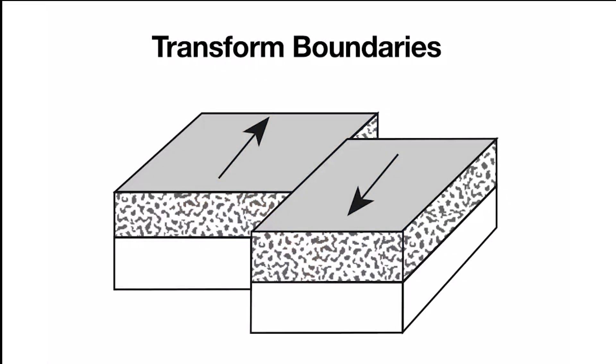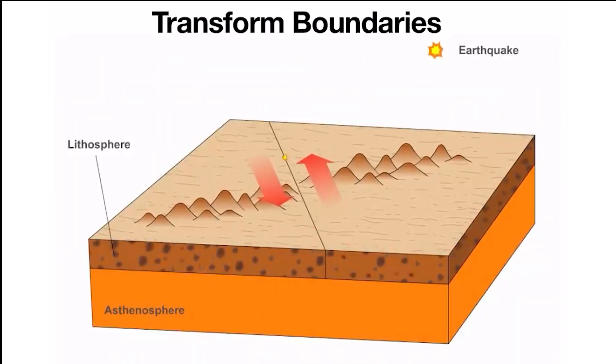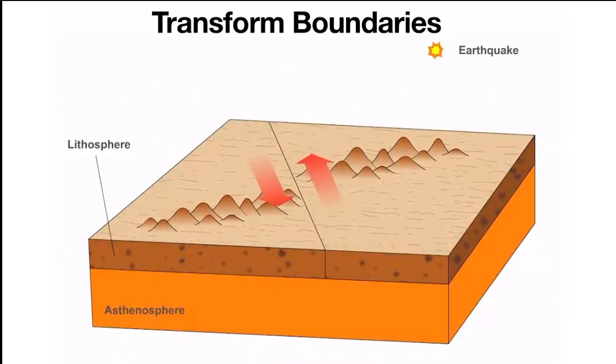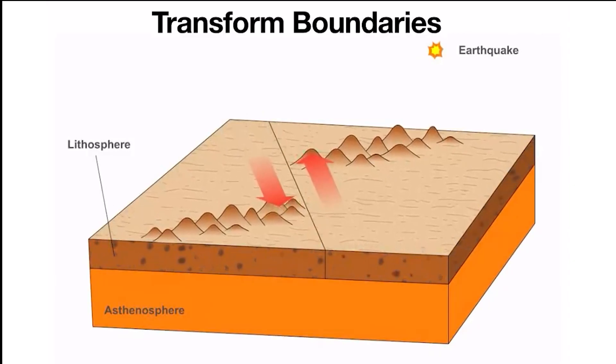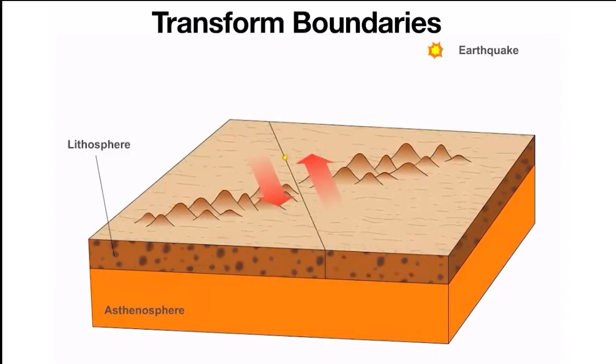Now, instead of plates moving towards each other or apart, transform boundaries are where two plates slide past each other. Here, plates don't collide or spread apart, they just grind against each other side by side.